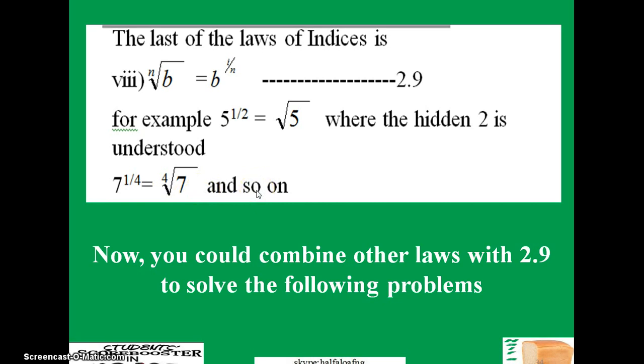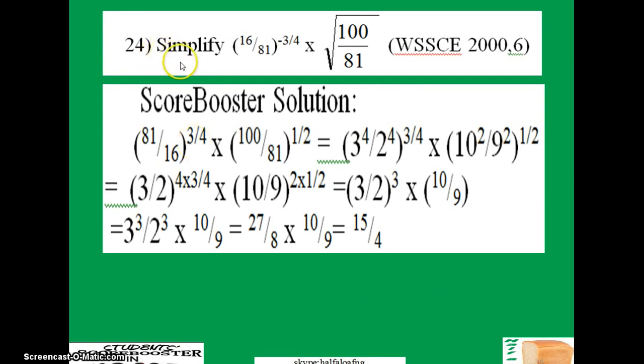Now we could combine all those laws with law 2.9 to solve further problems. Let's take an example. Simplify 16/81 raised to power minus 3/4 times 100/81 raised to power 1/2. What we are going to do here is apply law 2.9. This square root is the same as 1/2.